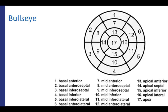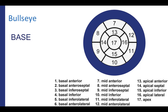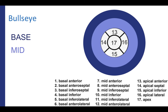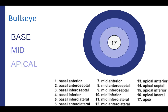These 17 segments can also be represented using a bullseye diagram. The outer ring in a bullseye diagram corresponds to the basal segments. The middle ring corresponds to midventricular segments. The inner ring corresponds to apical segments, and finally the bullseye corresponds to the true apex.